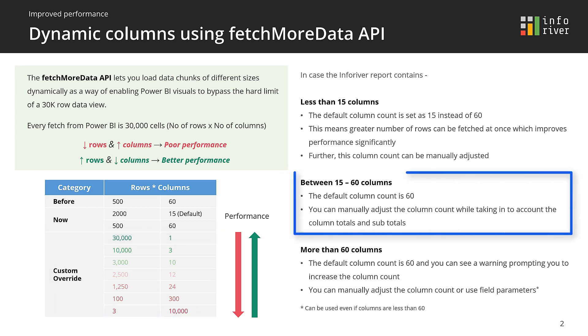When there are between 15 and 60 columns in the report, the default column count is set to 60. You can also manually adjust the column count while taking into account the column totals and subtotals to optimize for performance.